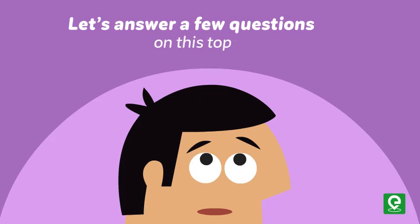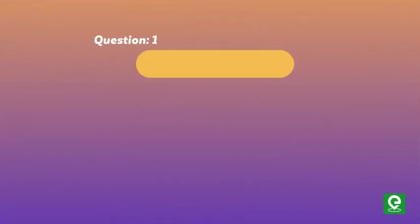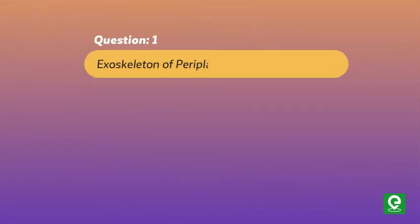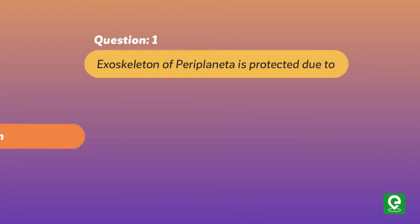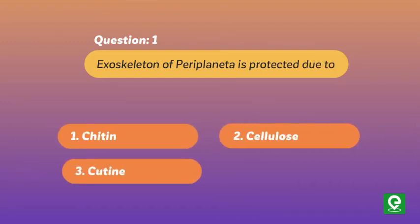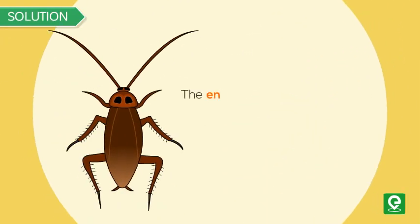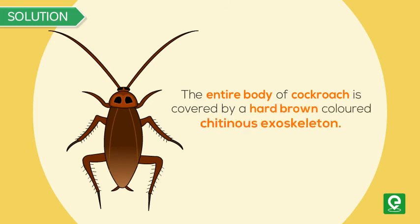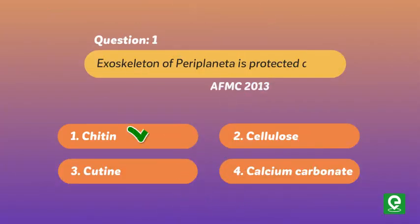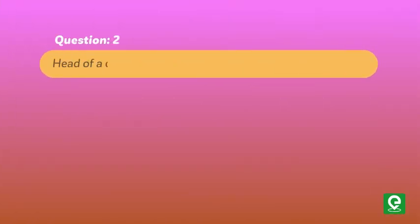Question 1: The exoskeleton of Periplaneta is protected due to — (1) chitin, (2) cellulose, (3) cutin, or (4) calcium carbonate. This question was asked in AFMC 2013. Solution: The entire body of the cockroach is covered by a hard brown-colored chitinous exoskeleton; hence option 1 is correct.